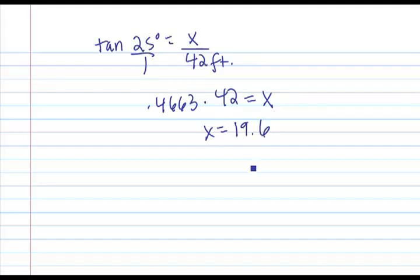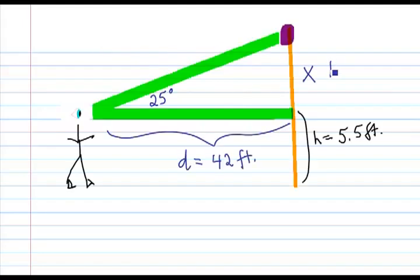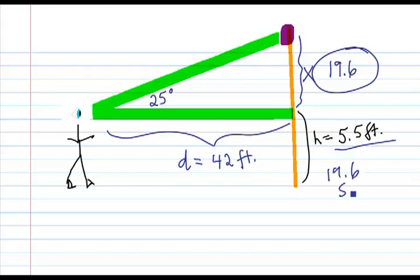And what we're going to do now is take this measurement and go back to the previous page and realize that the 19.6 is this region here and you're going to have to add your height to get your final overall height for this object. 19.6 plus 5.5 should give you 25.1 feet as a total height for this purple object.